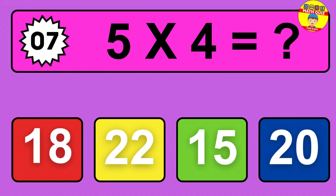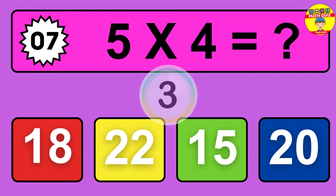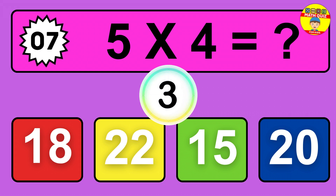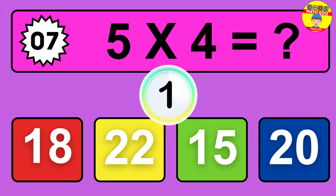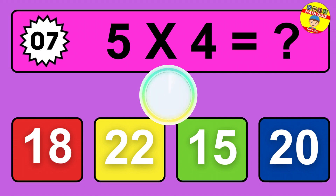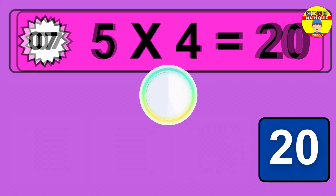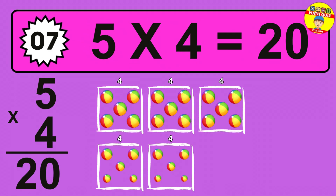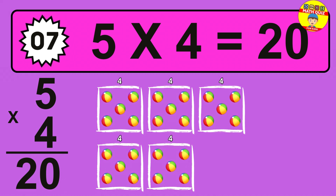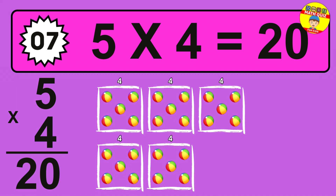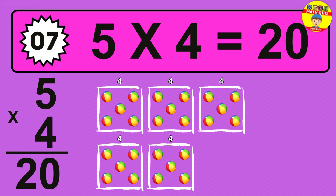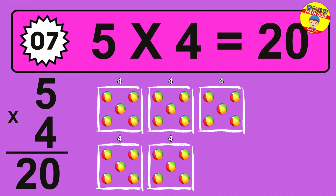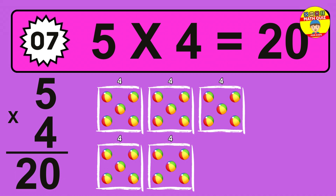Question 7. 5 times 4 equals what? The answer is 5 times 4 is 20. To calculate, we have 5 groups with 4 balls each one. So how many balls do we have? 20 balls.